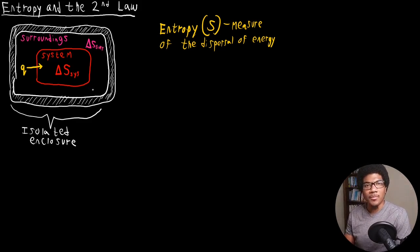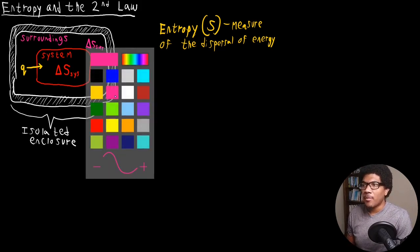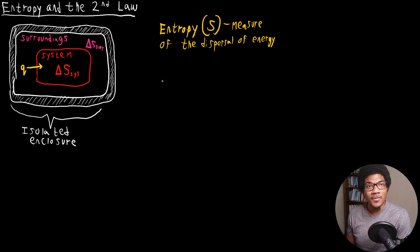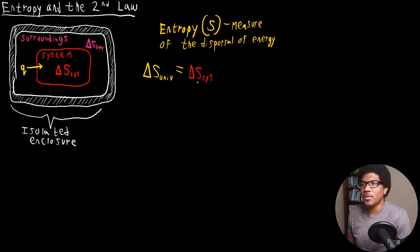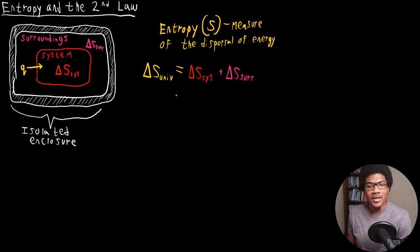So you have a delta S for the system and a delta S for the surroundings. The second law of thermodynamics is related specifically to the delta S of your entire universe. You're going to have a change in delta S for the system, a change in delta S for the surroundings, and the sum of both of those gives you the delta S for your universe. Let's define delta S universe as being equal to the sum of delta S for your system plus the delta S of your surroundings. When we're talking about the second law of thermodynamics, we're really referencing the change in entropy for the universe, not just the system and not just the surroundings.